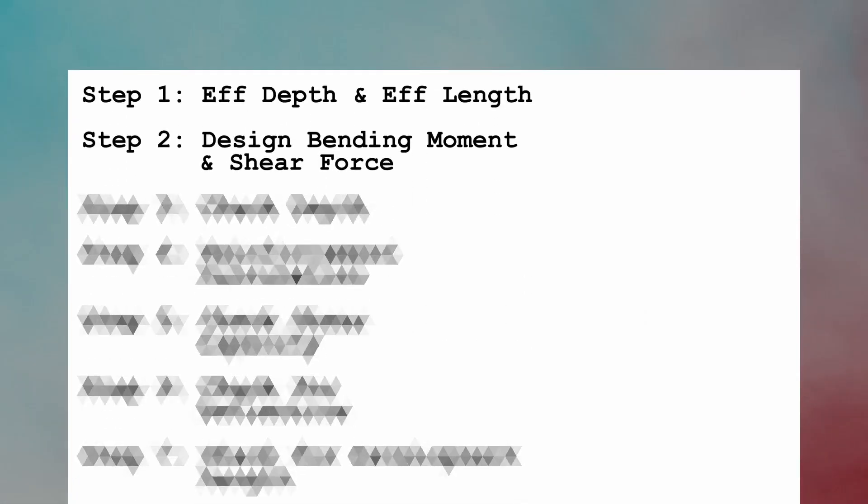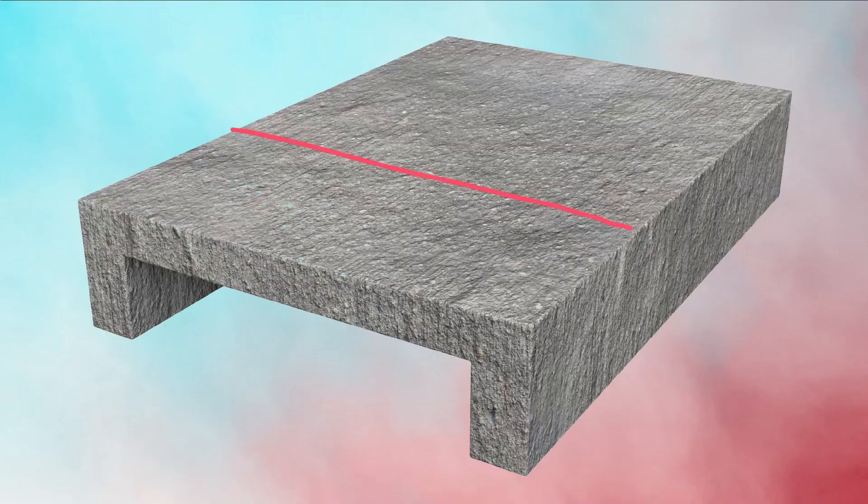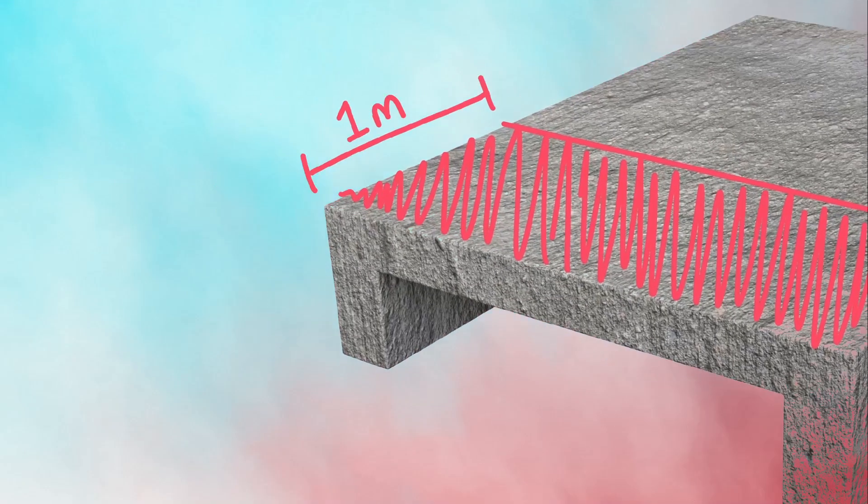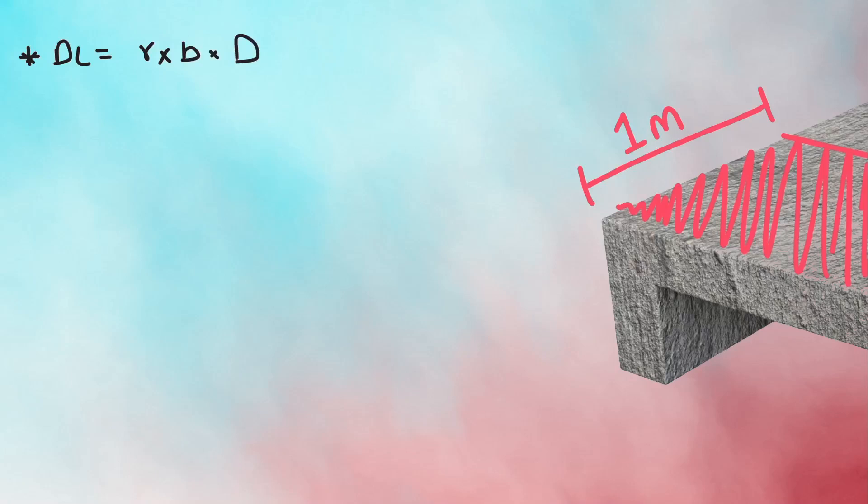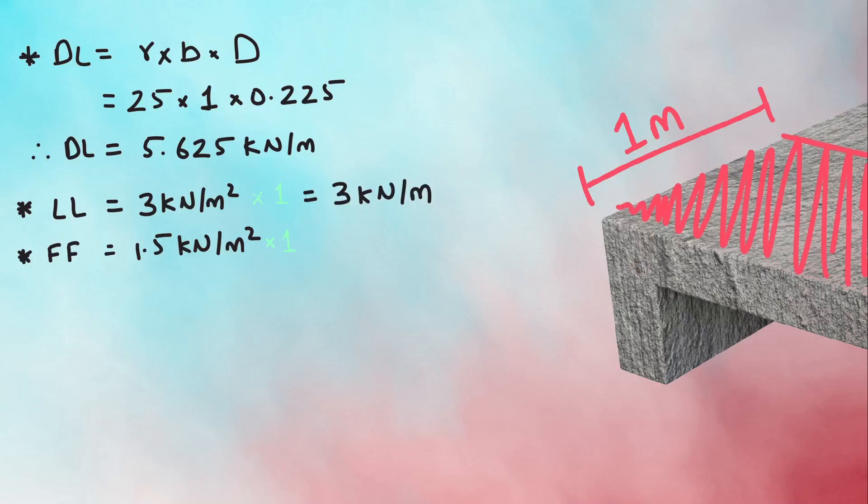Step 2 is calculating the design bending moment and design shear force. Assuming the slab to be a 1 meter wide strip, the total dead load would be gamma into B into total depth D, which equals to 5.625 kN per meter. Let's take the live load of 3 kN per meter square and floor finish of 1.5 kN per meter square. But since we are only considering 1 meter strip, we multiply both by 1 giving the live load of 3 kN per meter and floor finish of 1.5 kN per meter. Adding them gives the total UDL of 10.125 kN per meter. Factoring it by 1.5 gives the factored load Wu as 15.2 kN per meter.